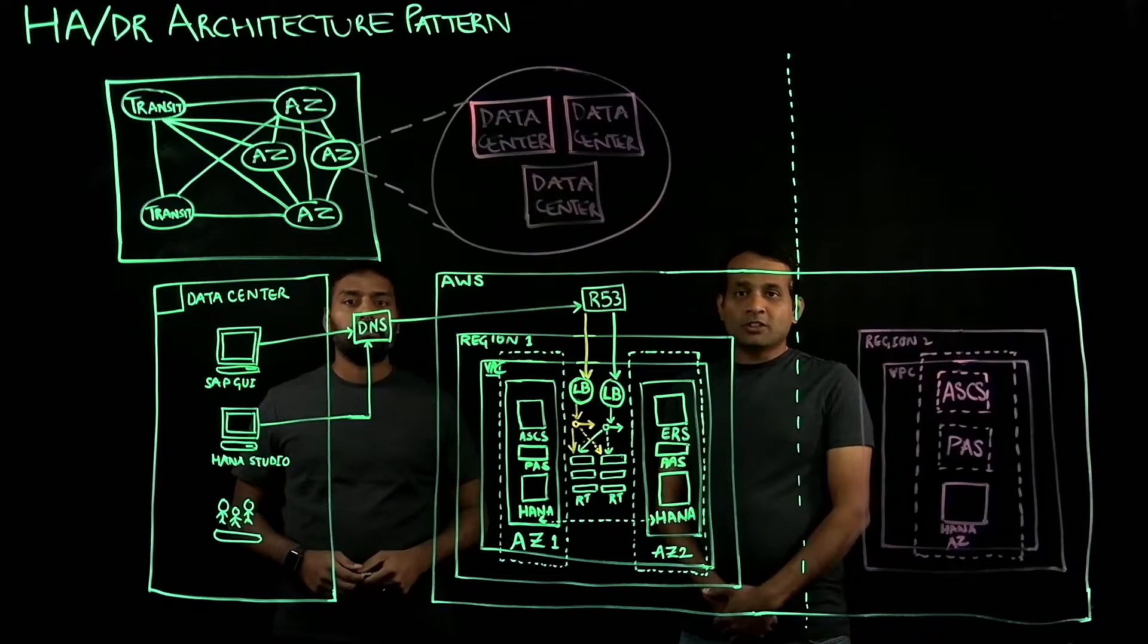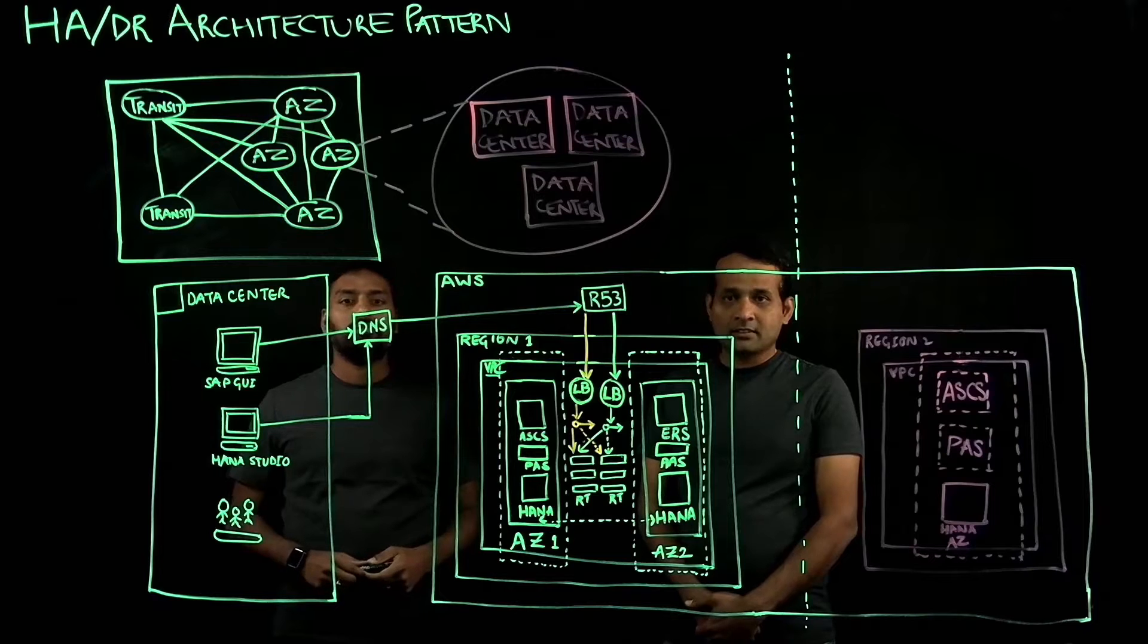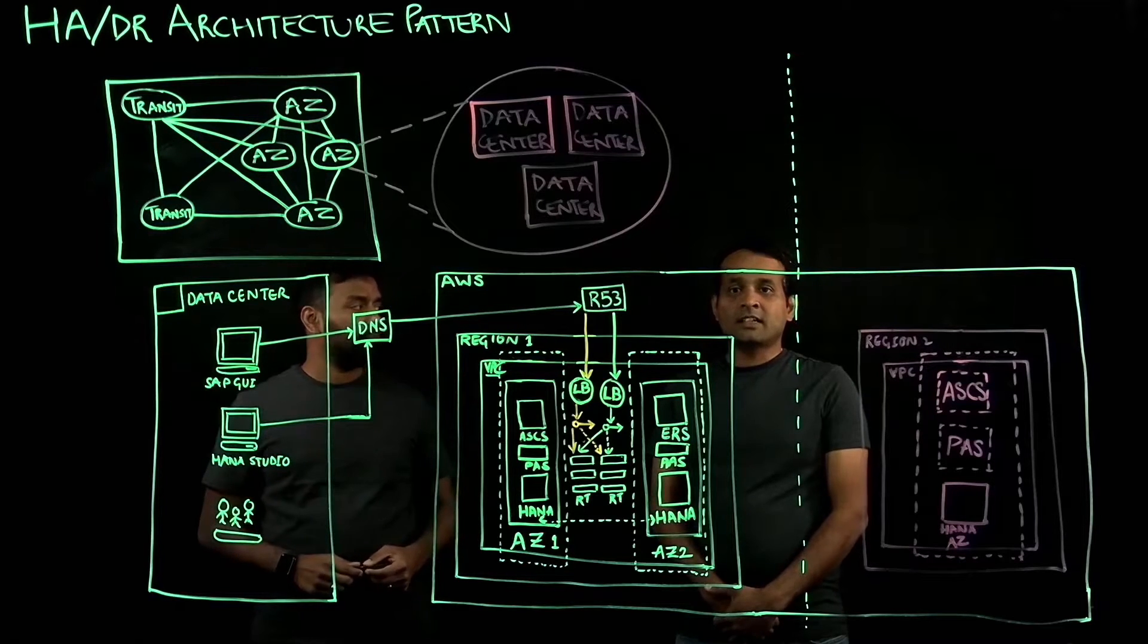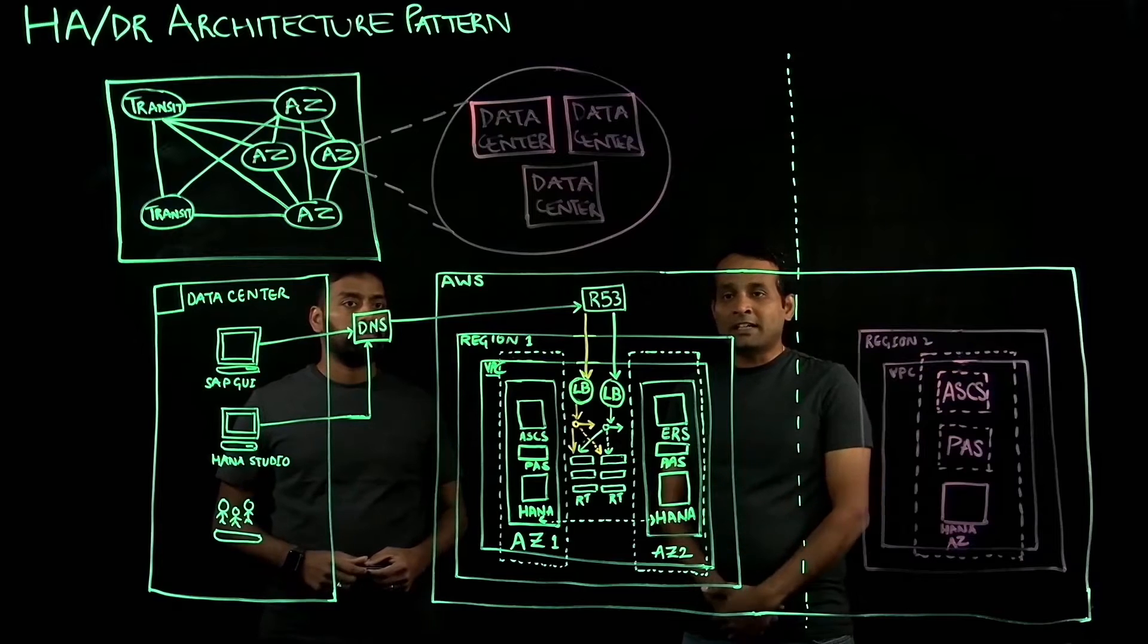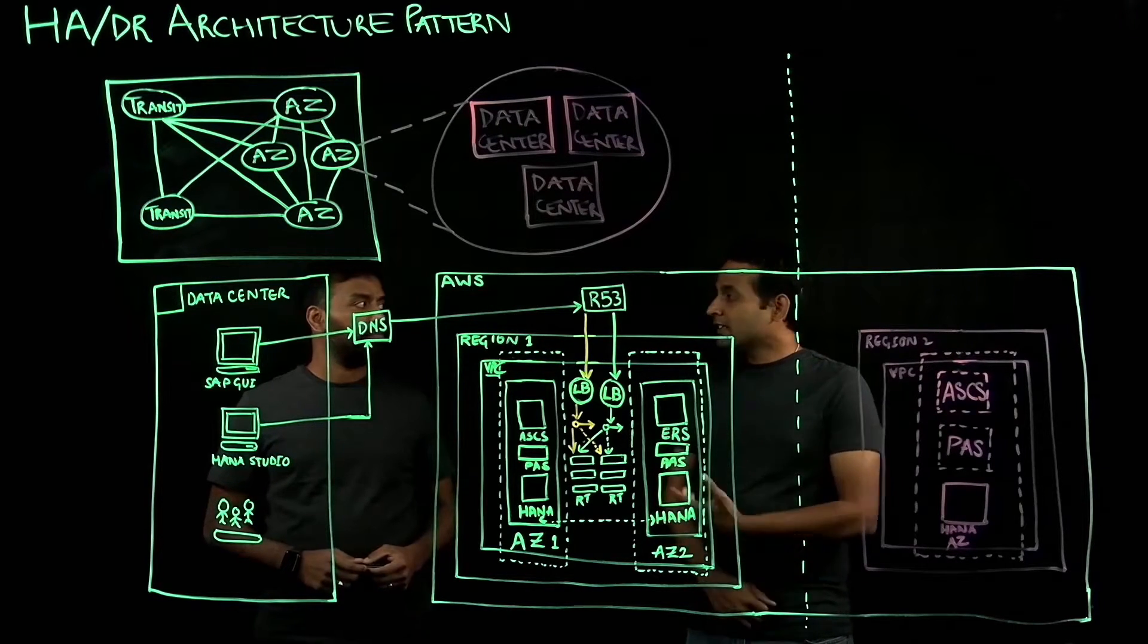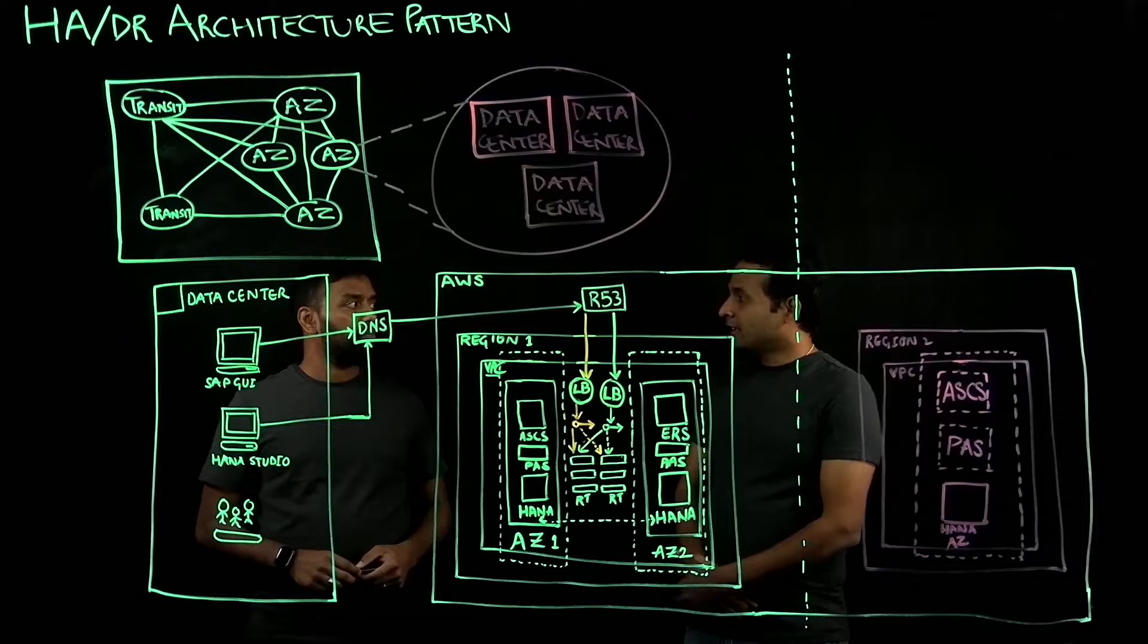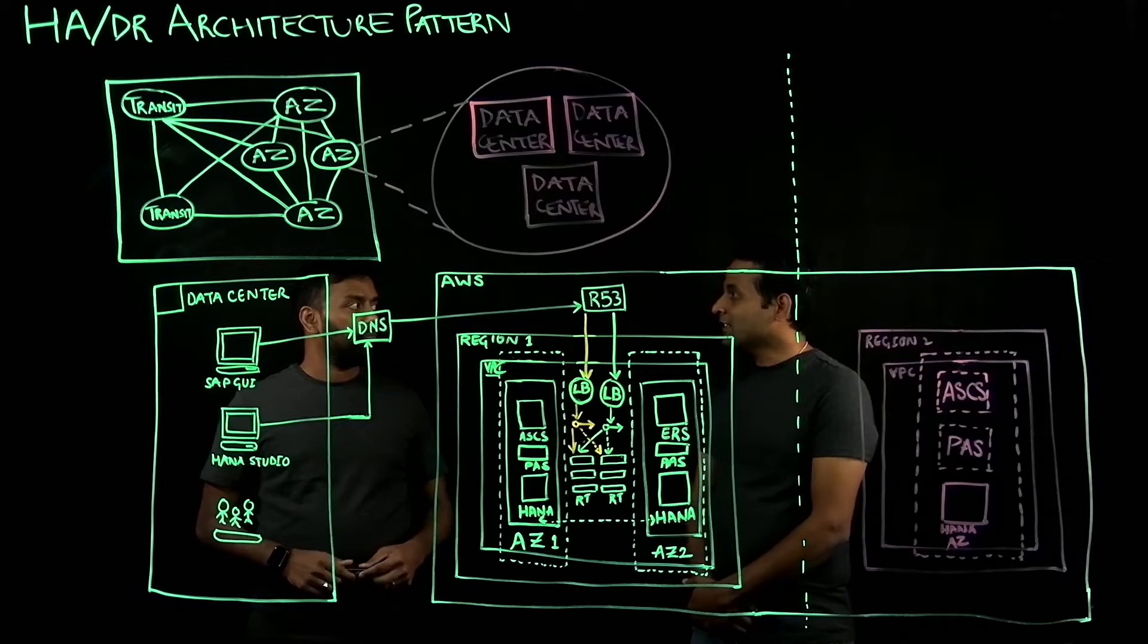Today we're here to discuss HADR architecture patterns for SAP workloads on AWS. As many of you know, there are more than 5,000 customers running their workloads on AWS that take advantage of AWS global infrastructure. Venkat, can you help us understand the reference architecture for HA and DR for SAP customers looking to achieve highest resiliency?